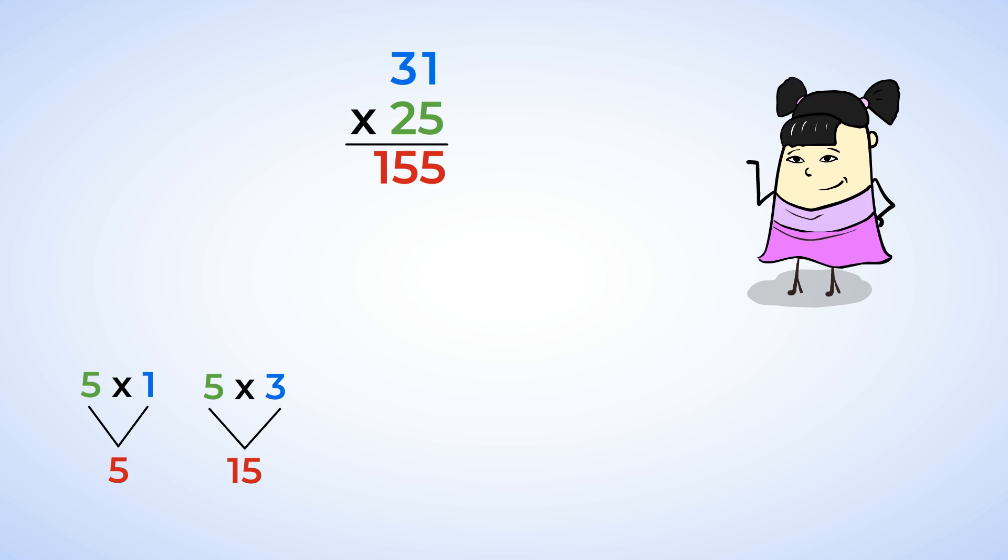But before we start multiplying the 2 in the tens place, we need to place a 0 right down here. The 2 is in the tens place, so it represents 2 tens, or 20. So really, we're multiplying 20 times 1. Well, we put the 0 down as a placeholder because it's the 0 from 20. And this lets us multiply the other numbers by 2 instead of 20. So we need to multiply the 2 by all the numbers on top, but not the 5. So 2 times 1 is 2. And we can place the 2 here next to the 0. And next, 2 times 3, well, that's 6.